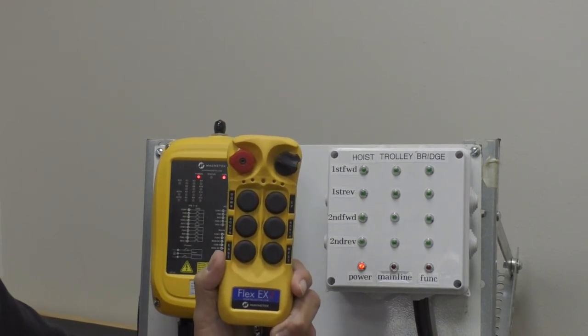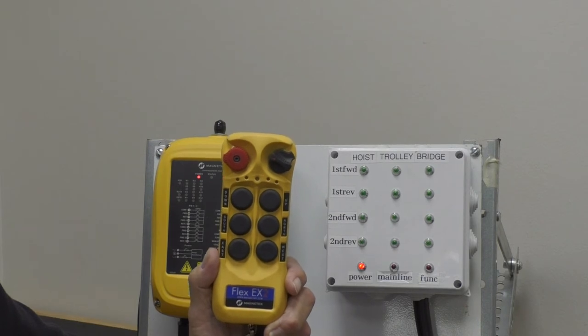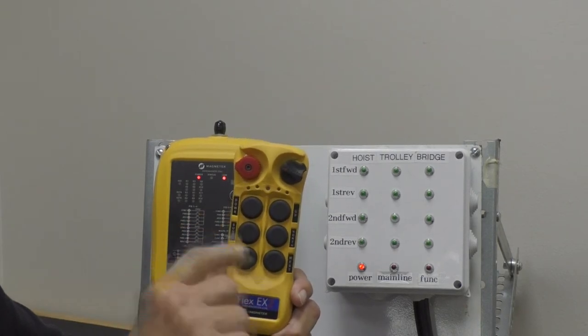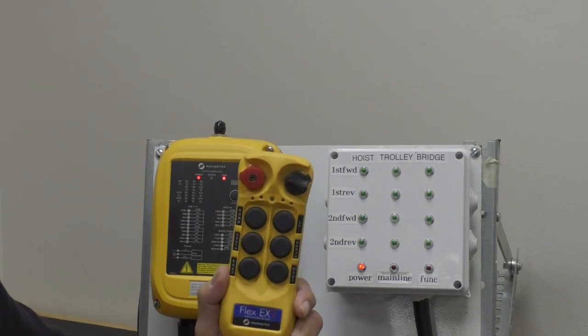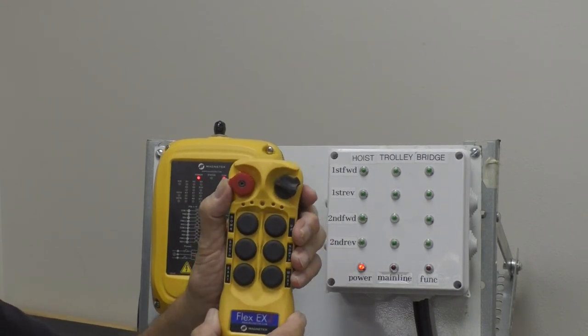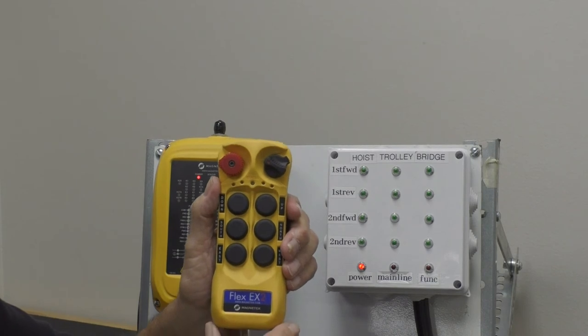To program a transmitter to the receiver, make sure that your e-stop and your off switch is off. You take the e-stop and push it up to engage it.